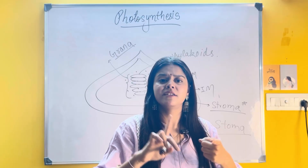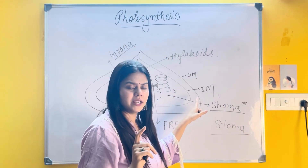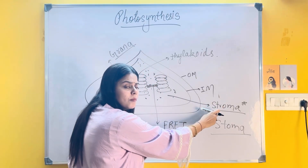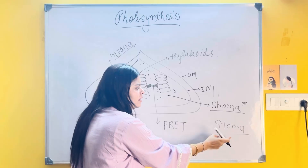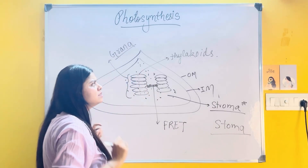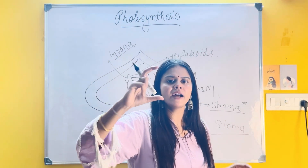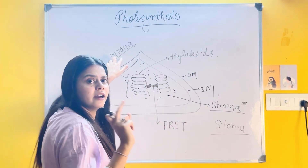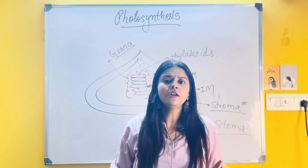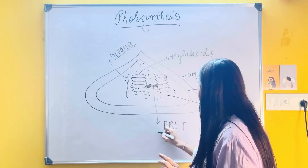To recap: it is a double membranous structure with an outer membrane and inner membrane. There is a colorless ground matrix called stroma — do not get confused with stoma. Then you have coin-like structures called thylakoids, and the entire stack of thylakoids together is called grana. Two granas are interconnected with each other with the help of a bar called a fret. This chloroplast diagram comes for drawing in your board exam.